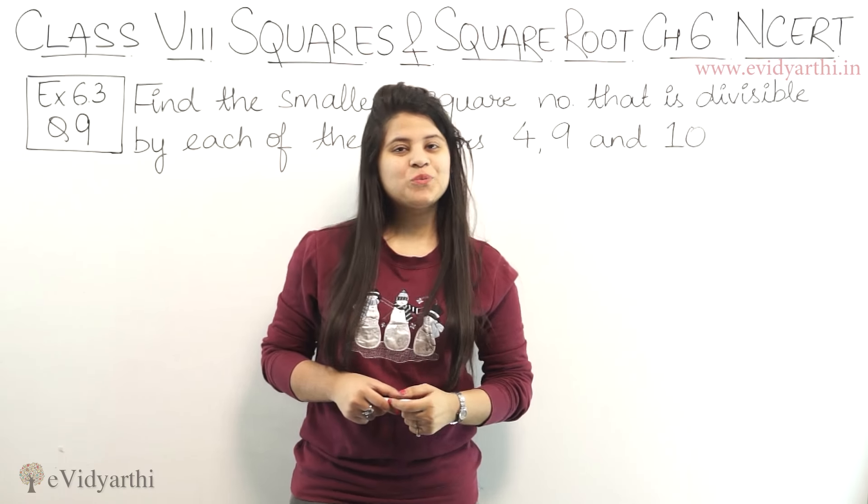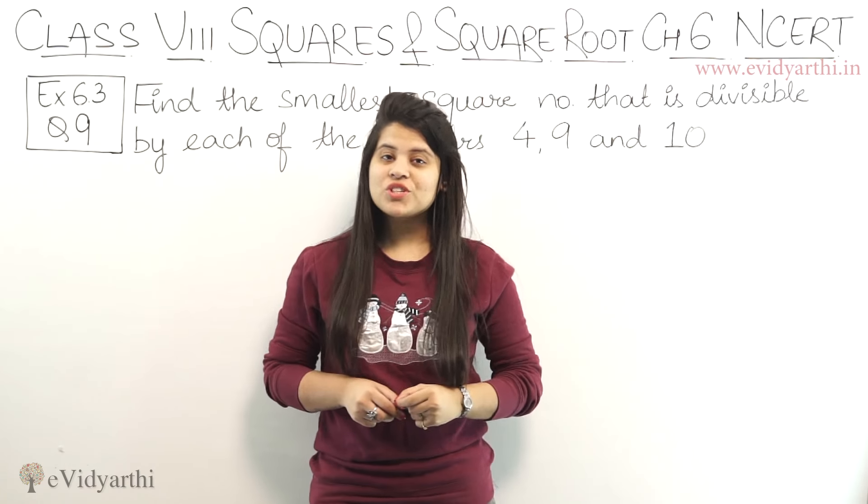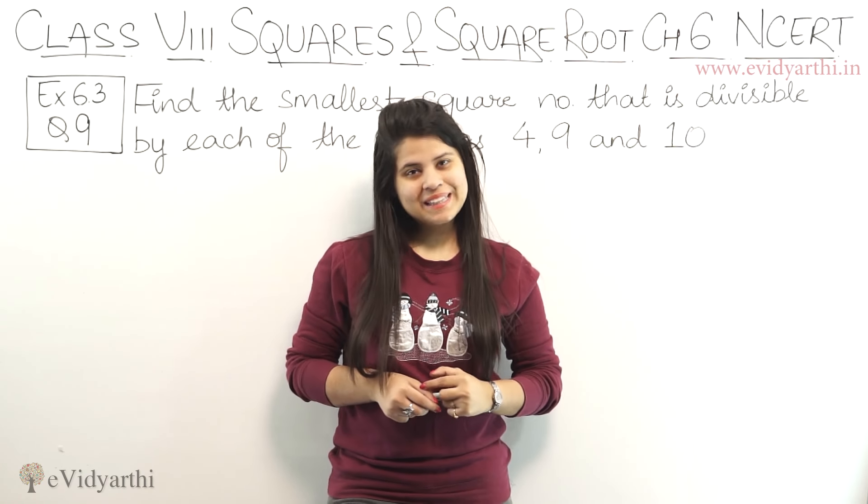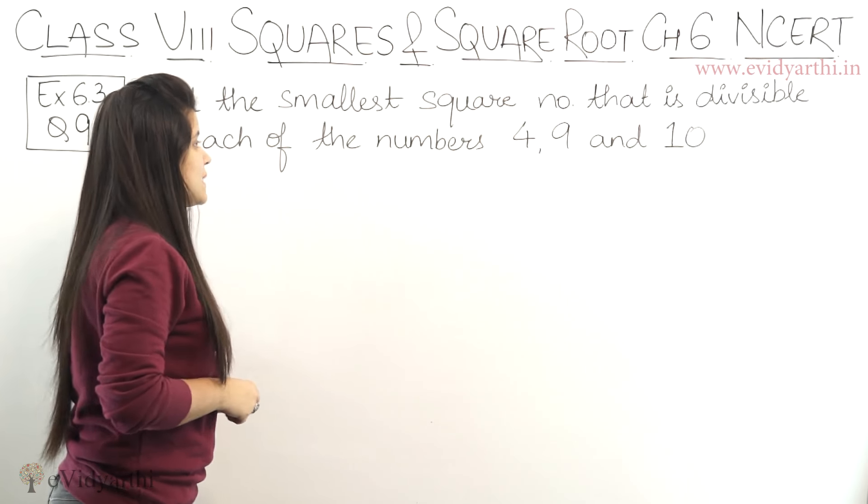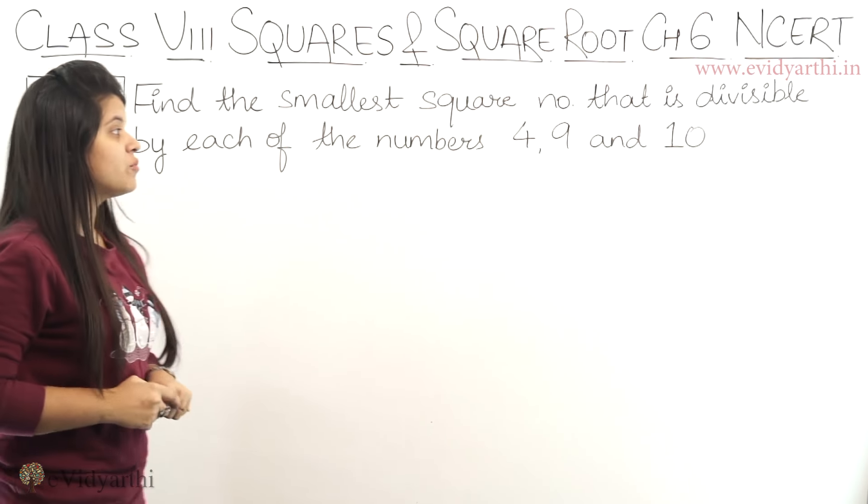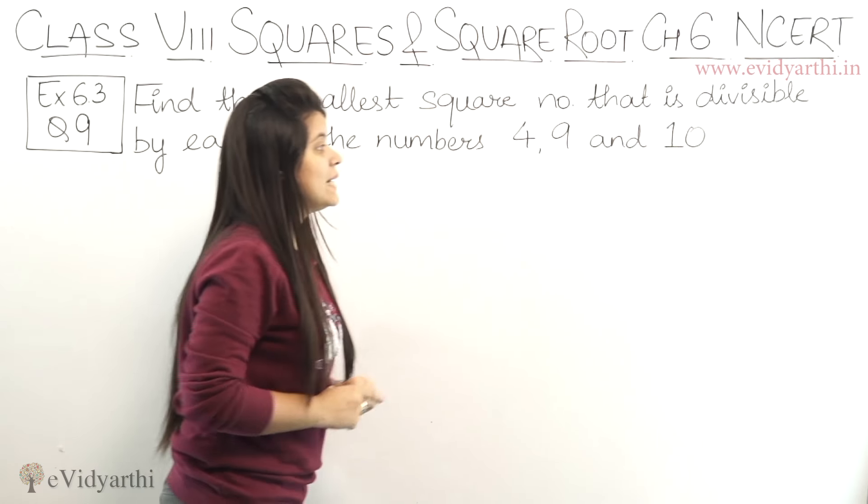Hello everyone, this is Malzi from Evikyati.in coming to question number 9, exercise 6.3. In this question we have to find the smallest square number that is divisible by each of the numbers 4, 9, and 10.